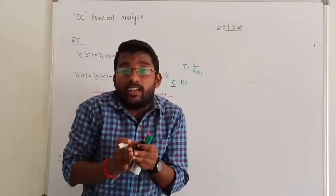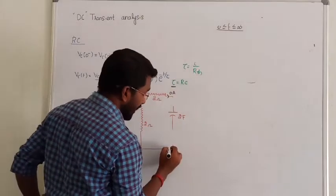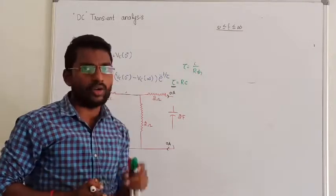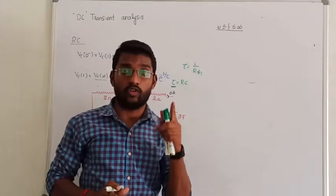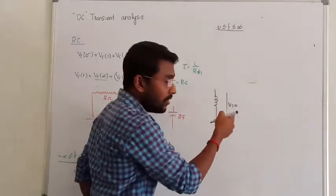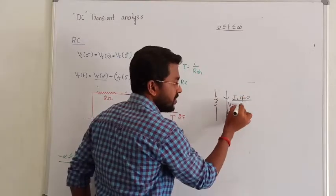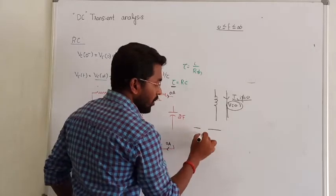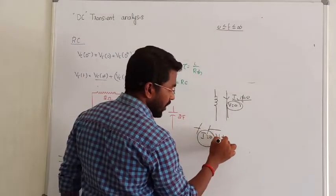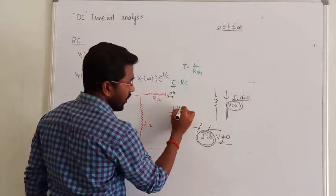In an open circuit, which quantity is going to be zero? Current will be zero. In steady state, the capacitor current is always zero. But voltage is not zero — in open circuit, current is zero, but voltage exists. In short circuit, voltage is zero but current exists. So in open circuit, I have some voltage across the capacitor — that is called VC(∞).